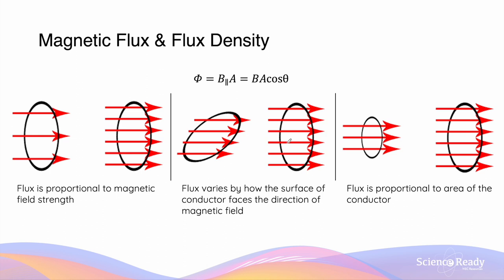In the second example, the flux density remains the same for both conductors, and so does the area. However, the orientation of the conductor is different, and that changes the angle between the normal of the circular loop and the direction of the magnetic field. Remember that theta is defined as the angle between the normal of the surface and the magnetic field lines — so that's this angle here.